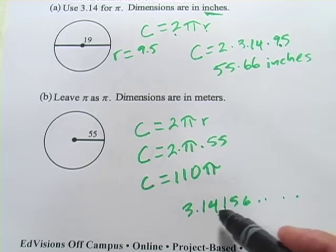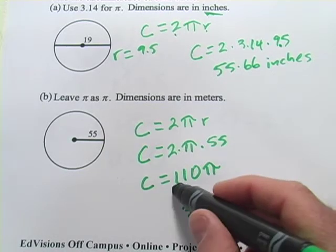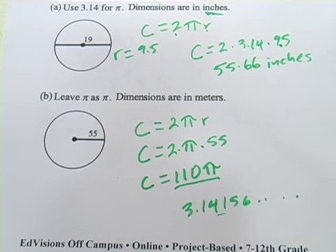Most of the times, 3.14 is close enough. But if you want it to be perfectly exact, you really have to write it as 110 times π. So that's a little bit about finding the circumference of circles.